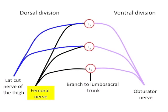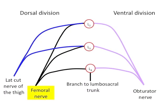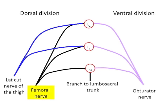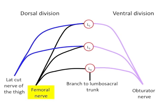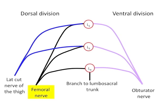The femoral nerve is the largest branch of the lumbar plexus. It arises from the dorsal divisions of the ventral rami of the 2nd, 3rd, and 4th lumbar nerves.